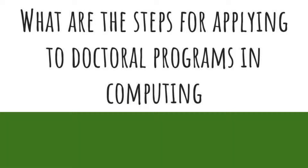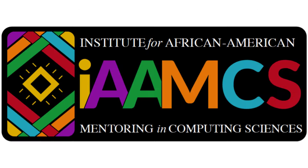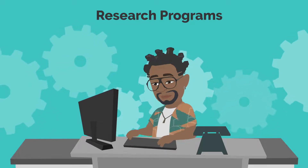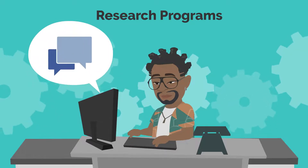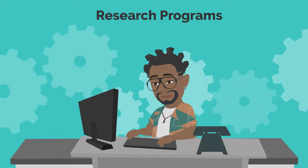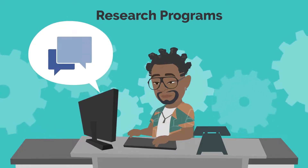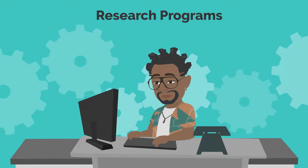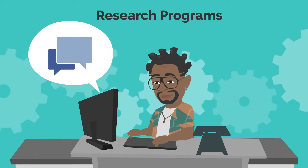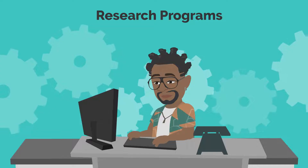What are the steps for applying to doctoral programs in computing? Brought to you by the Institute of African American Mentoring in Computing Sciences. Number one: research potential programs and institutions. Start by identifying the schools and programs that align with your interests and goals. This may involve looking at program websites, talking to current or former students, and reaching out to faculty to learn more about their research and the program.